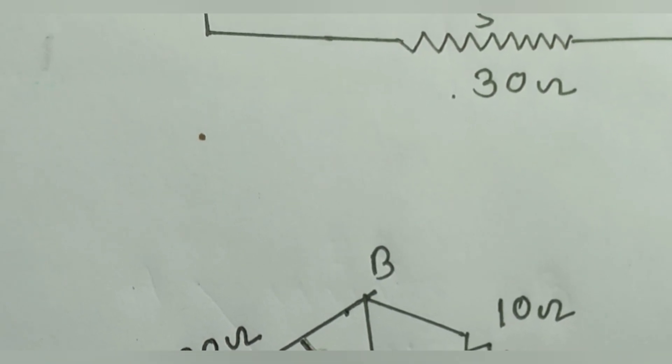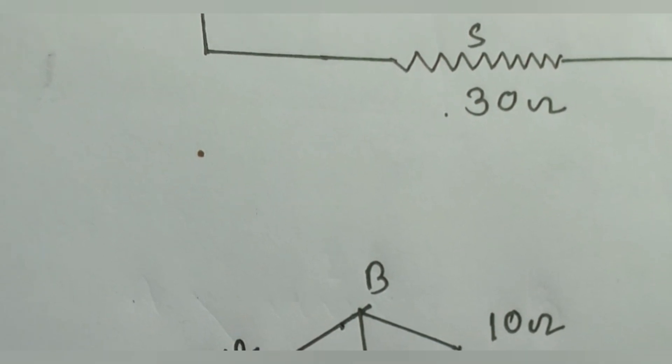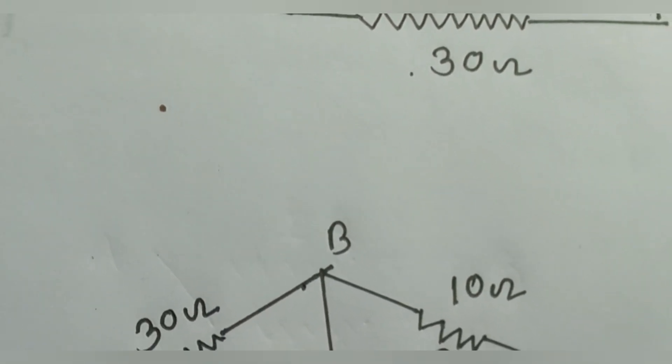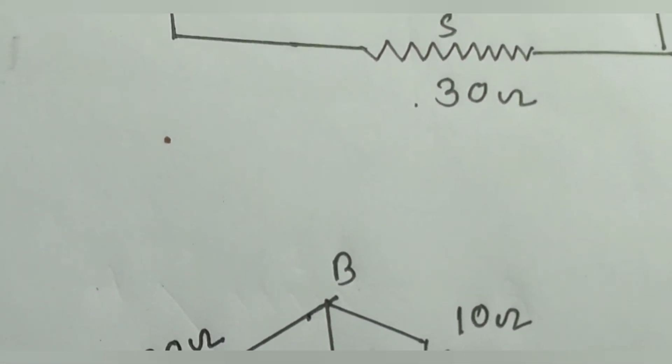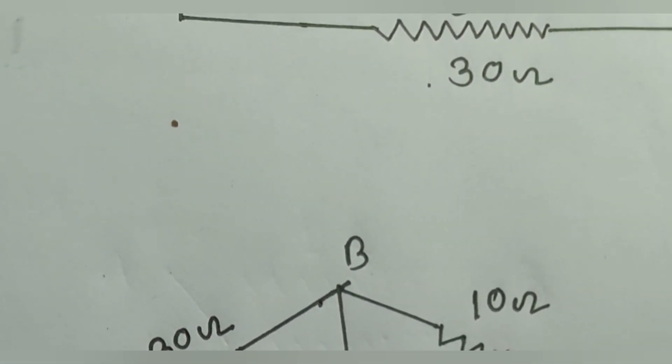This is P arm, this is Q arm, this is R, and this is S. We know that if in Wheatstone Bridge circuit P by Q equal to R by S, then it is called balanced circuit.